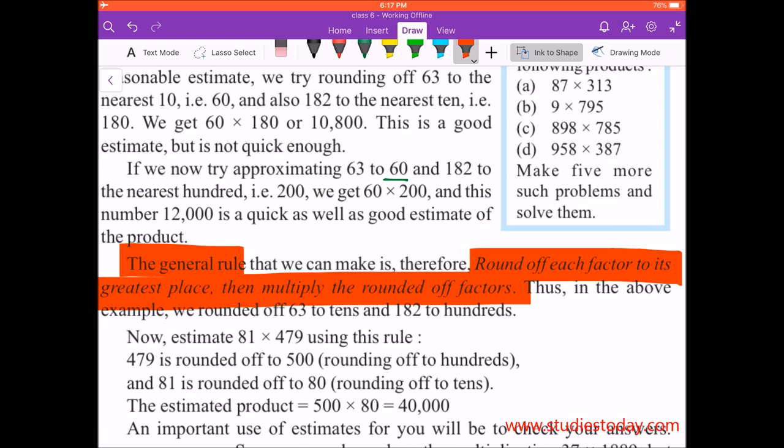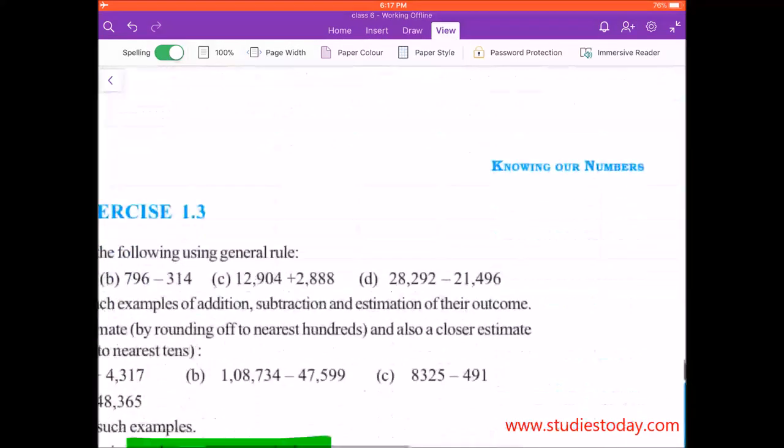So what we have to do is multiply each number in its place. For example, in part B, 9 into 795, we round off 9 to the nearest tens and 795 to the nearest hundreds. With this concept, we start this question.